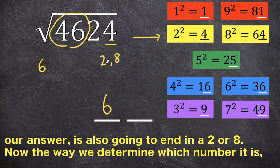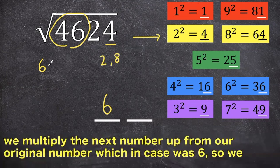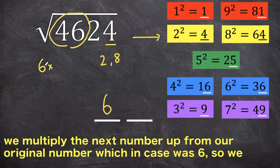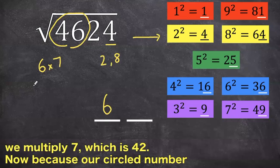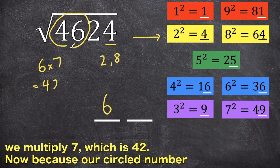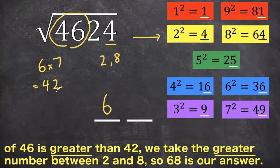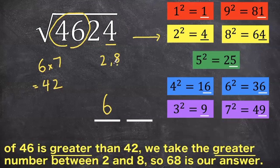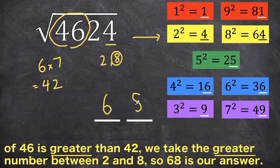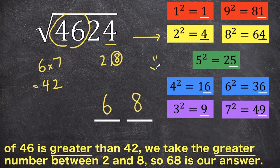Now, the way we determine which number it is for our answer, we multiply the next number up from our original number, which in case was 6, we multiply 7, which is 42. Now, because our circle number 46 is greater than 42, we take the greater number between 2 and 8, so 68 is our answer.